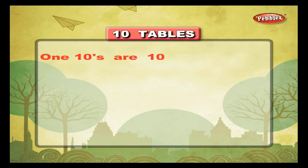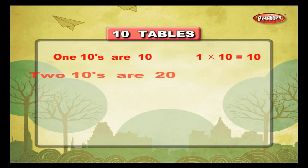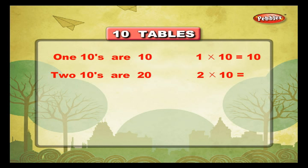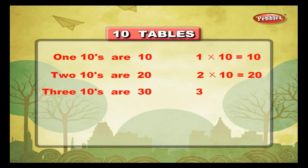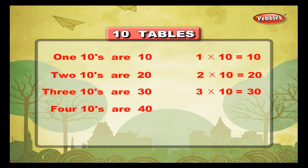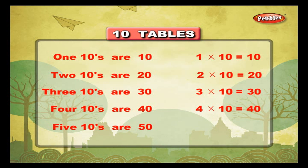1 ten is 10, 1 into 10 is equal to 10. 2 tens are 20, 2 into 10 is equal to 20. 3 tens are 30, 3 into 10 is equal to 30. 4 tens are 40, 4 into 10 is equal to 40. 5 tens are 50, 5 into 10 is equal to 50.